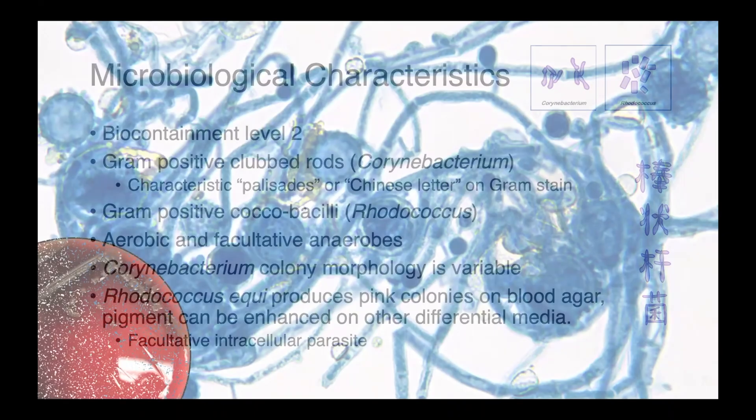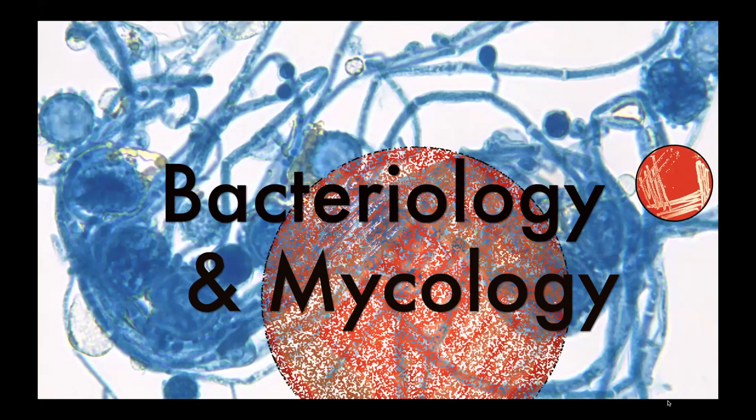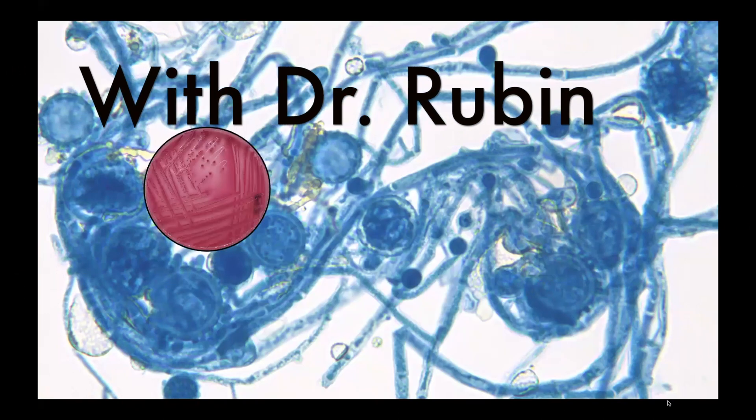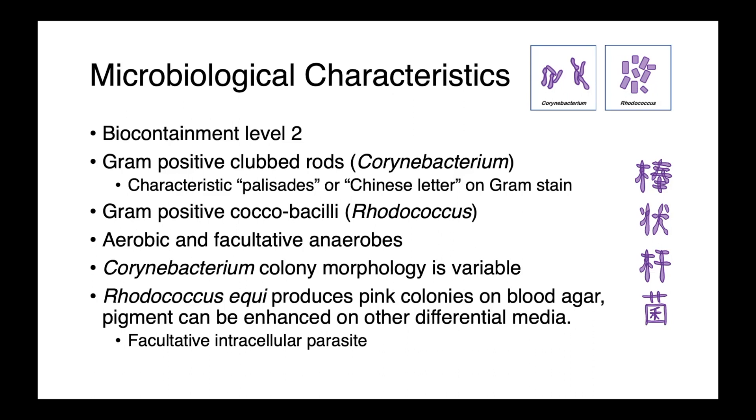In today's lecture, we're covering two gram-positive genera, Corynebacterium and Rhodococcus. The Corynebacterium cause important diseases in human and veterinary medicine, and one species, Corynebacterium diphtheriae, is controlled with a prototypical toxoid vaccine. Both the Corynebacteria and Rhodococcus are biosafety level 2 organisms.